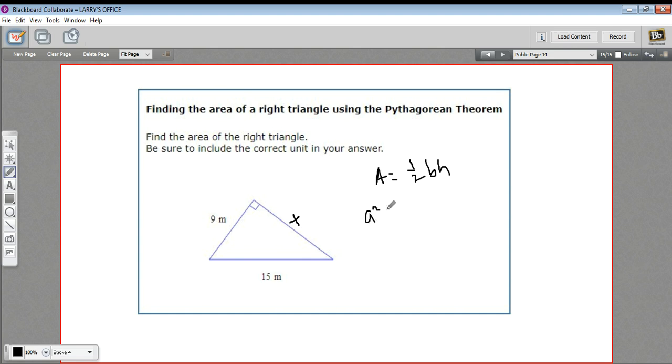The Pythagorean theorem, of course, a squared plus b squared equals c squared, and a and b are the legs of the right triangle. So this is going to be nine squared plus, in this case, it's x we're solving for, so I'm just going to put x squared in there, and c squared, 15 squared.